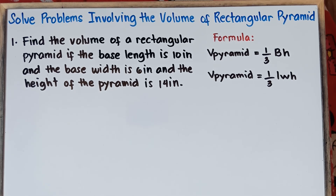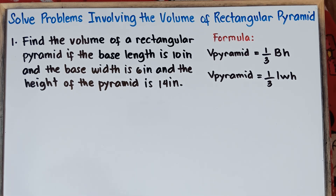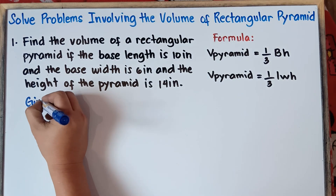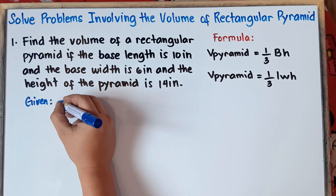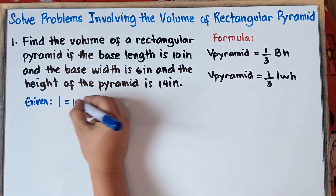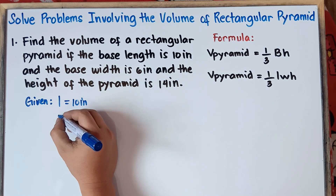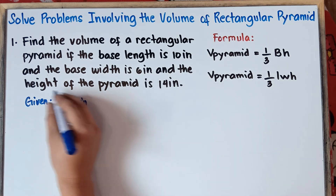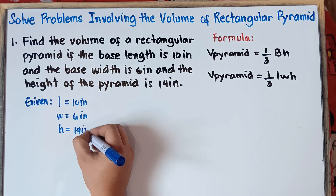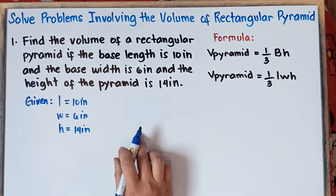Let's start with Example 1. Find the volume of a rectangular pyramid if the base length is 10 inches, the base width is 6 inches, and the height of the pyramid is 14 inches. When dealing with problem solving, first you need to understand the problem, then write down the given values to be guided. So we have: base length = 10 inches, base width = 6 inches, and height = 14 inches. You can also illustrate for better understanding.